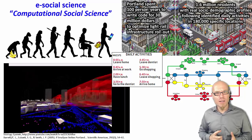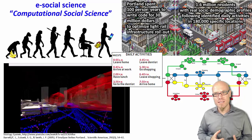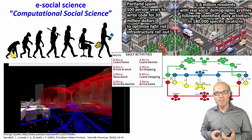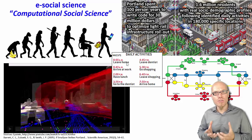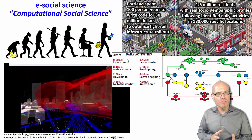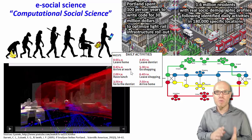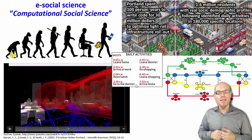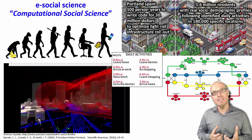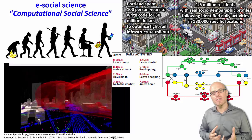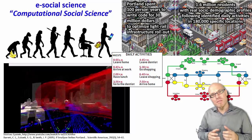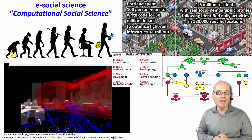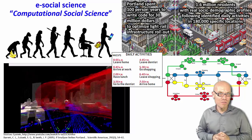They basically simulated all 1.6 million residents of Portland with a real socio-demographic profile — modeling what time they go to work, when they arrive, when they go to lunch, when they go home — and simulated 180,000 specific locations, really creating a miniature version of Portland that they could play with and use to optimize the light rail infrastructure rollout.